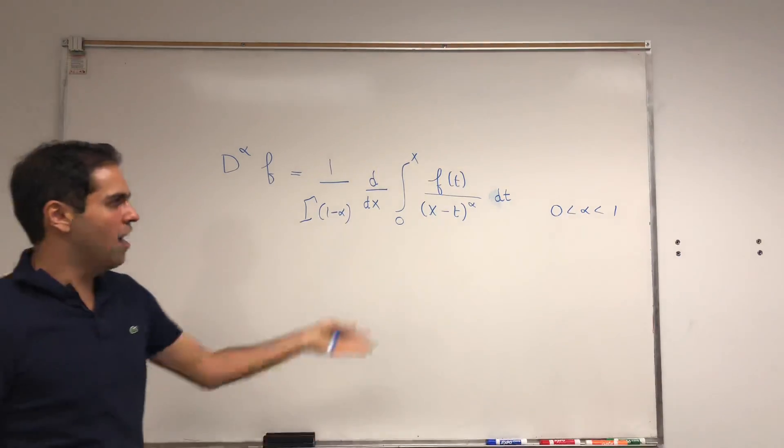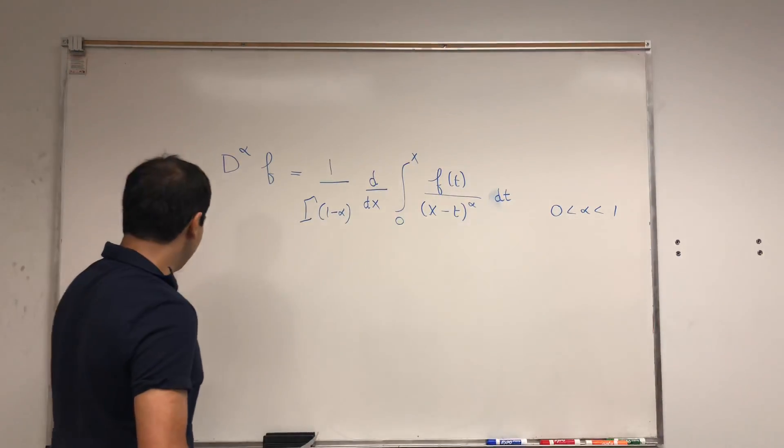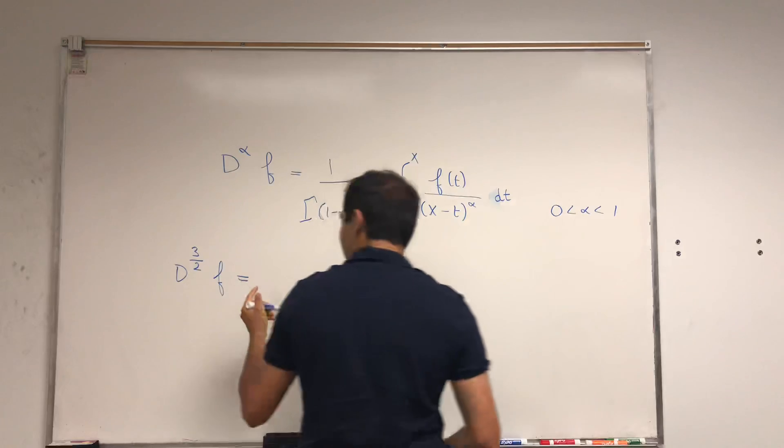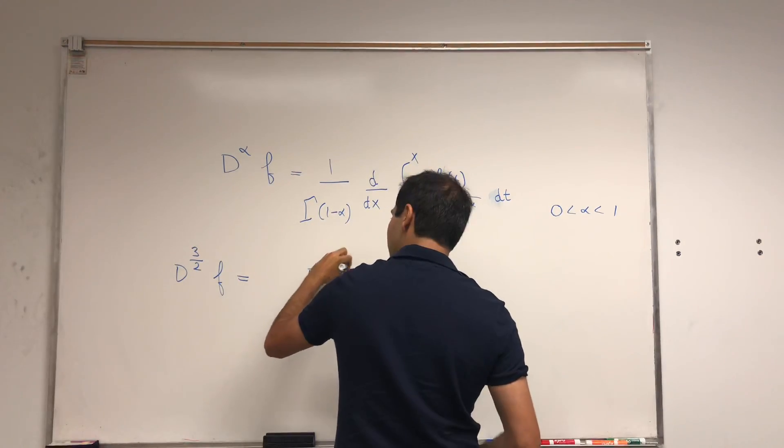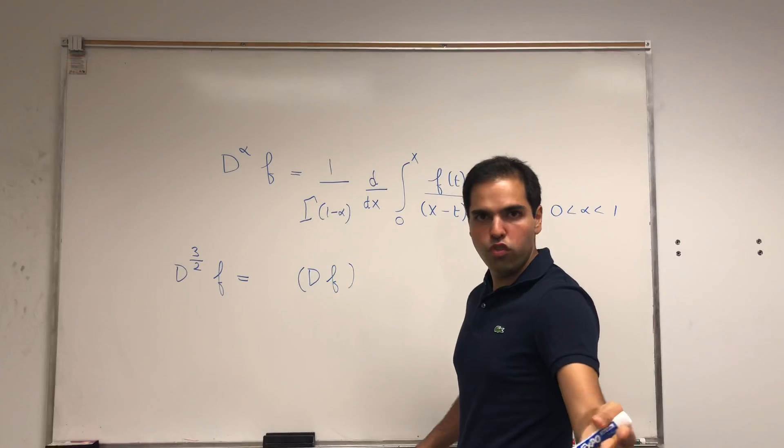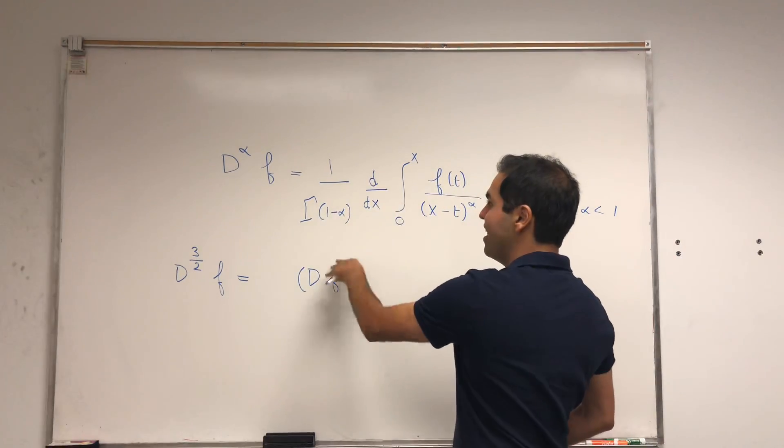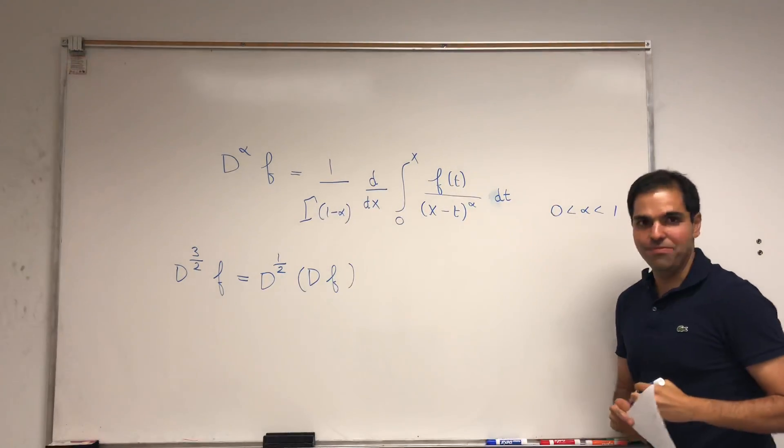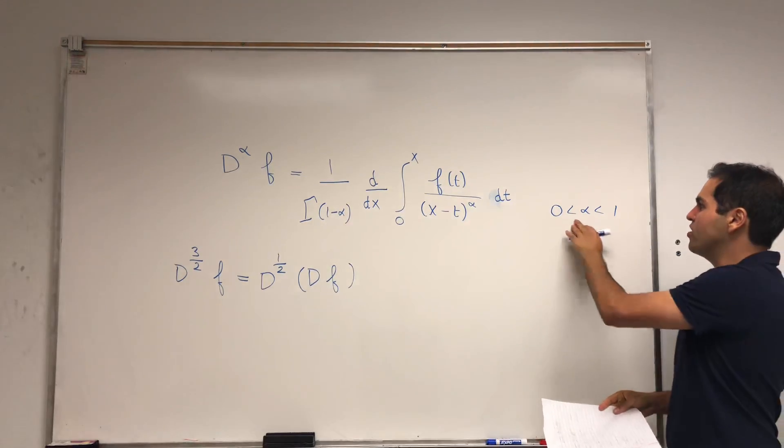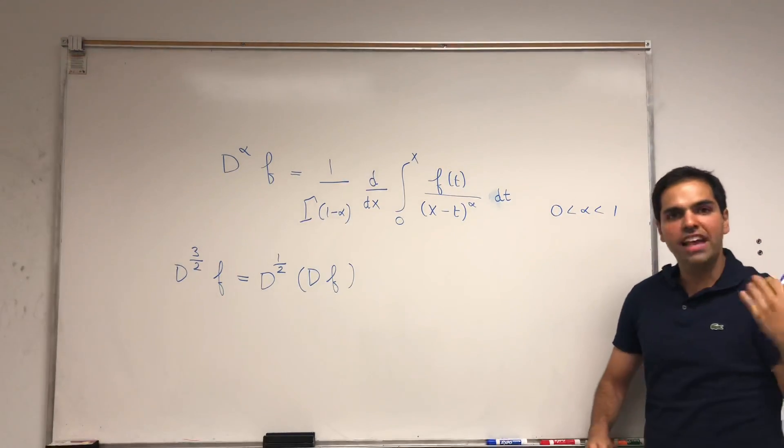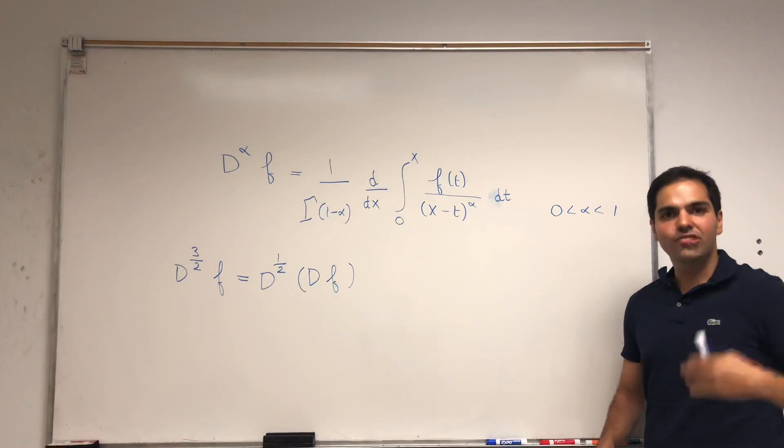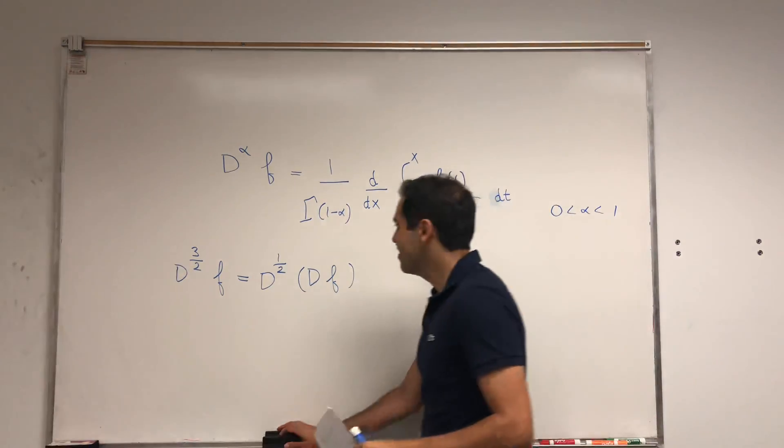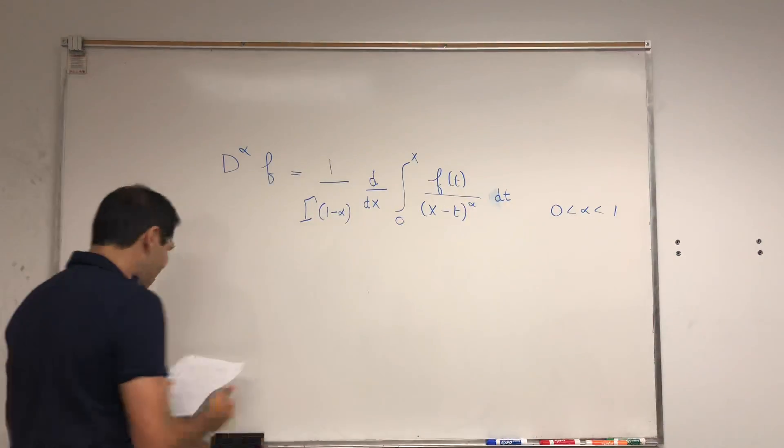And before I continue, you may ask, well what if alpha is greater than one? How would you calculate, let's say, the three halves derivative of f? Then you would first calculate the derivative of f using the usual formula, and then you take the half derivative of that half derivative with this formula. So indeed it works for every alpha, and in fact also for negative alpha, if you just consider integration. The negative alpha derivative is the alpha integral.